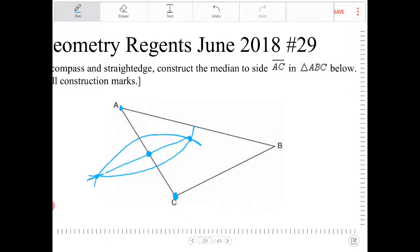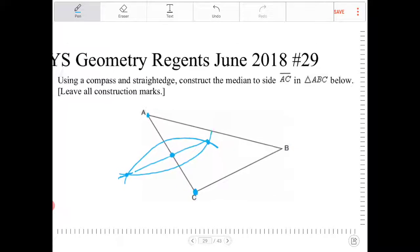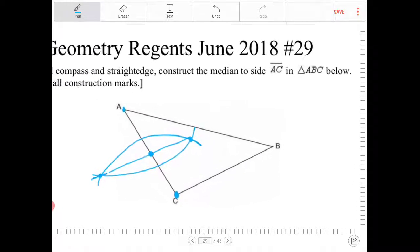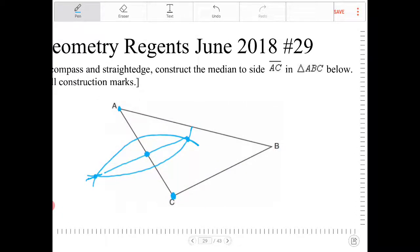So the construction markings that you should be making with your compass and straight edge should resemble something like this. The question here says to construct the median. So we haven't really drawn the median yet. We've identified where the midpoint is on AC.